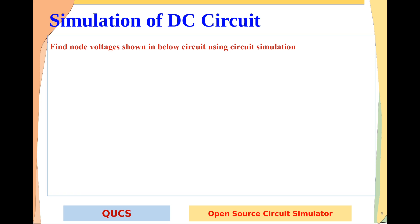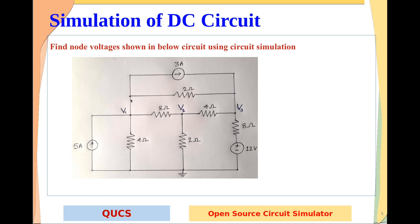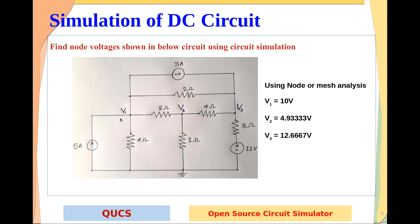So towards that, if you want to learn the basics of simulation software, here is a problem: find node voltages shown in the circuit below using circuit simulation. If we solve this circuit using node or mesh analysis, we get V1 = 10 volts, V2 = 4.9333 volts, and V3 = 12.667 volts. These are the theoretical values, and to verify whether they are correct or not, we will go for a circuit simulation.